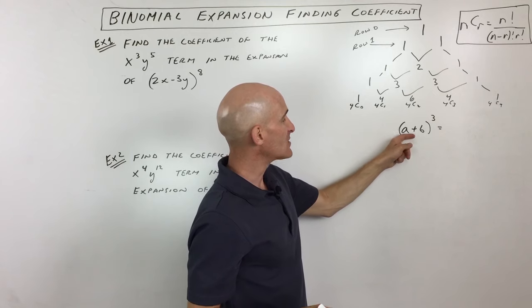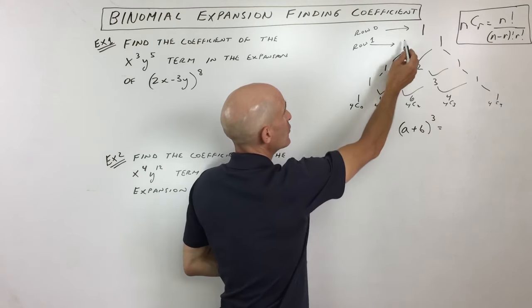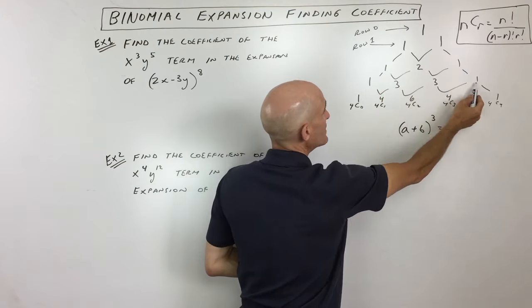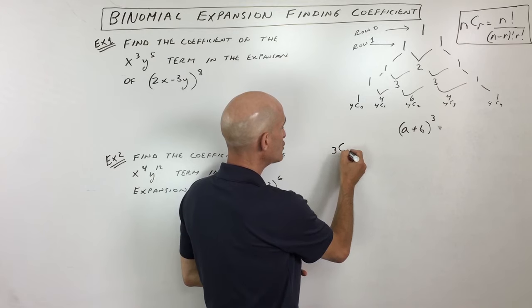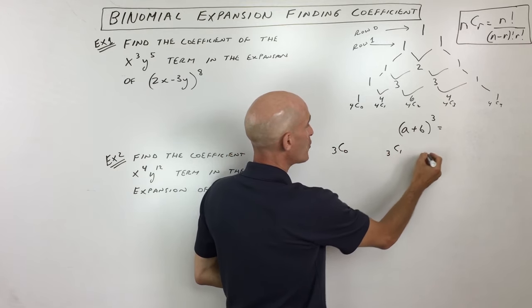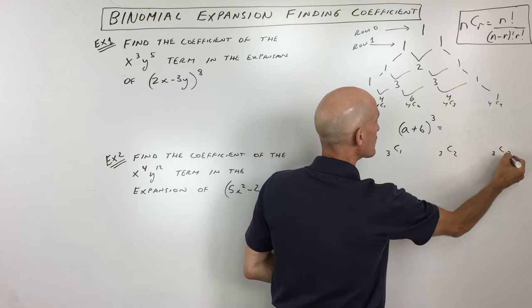So, for example, say we wanted to expand (a plus b) to the third power. What we can do is we can say, well, let's go down here to the third row, and these are our coefficients: 1, 3, 3, 1. The other way to do it is to go like this. We could say 3 choose 0, 3 choose 1, 3 choose 2, 3 choose 3.